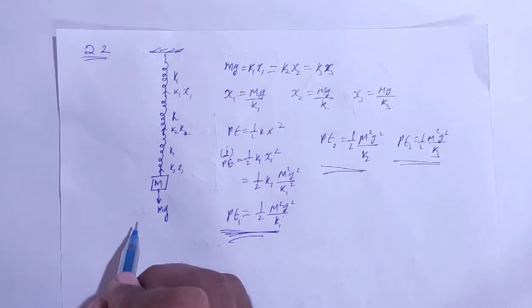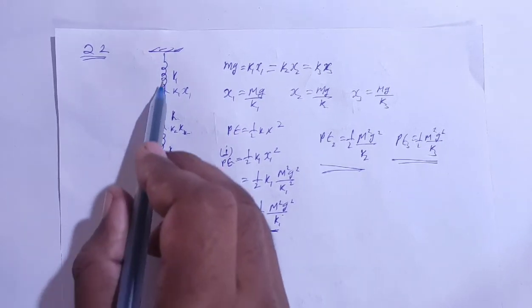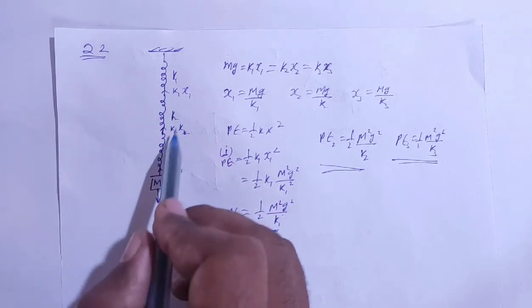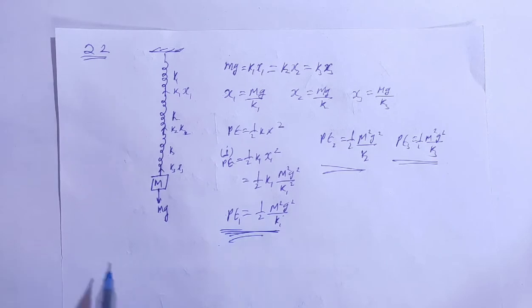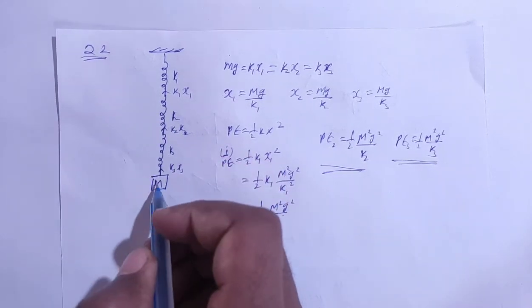Okay, third question is time period. What will be the time period of oscillation? To find time period, we need the equivalent force constant, the value of equivalent k. The three springs are in series.